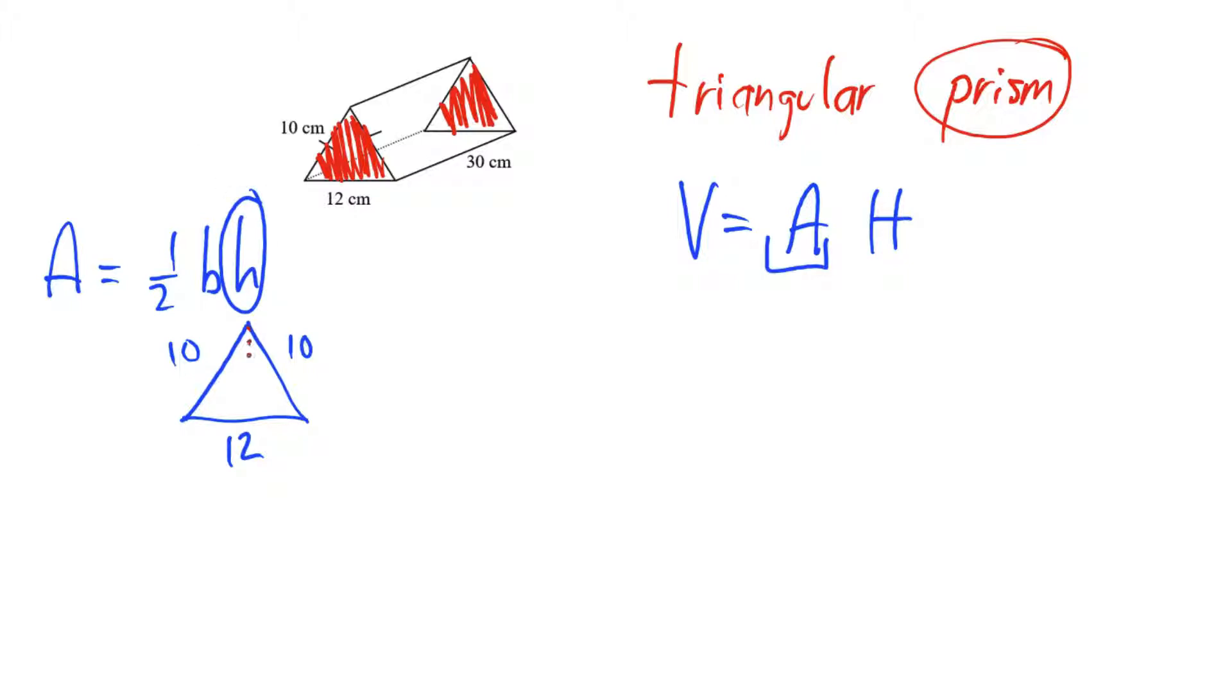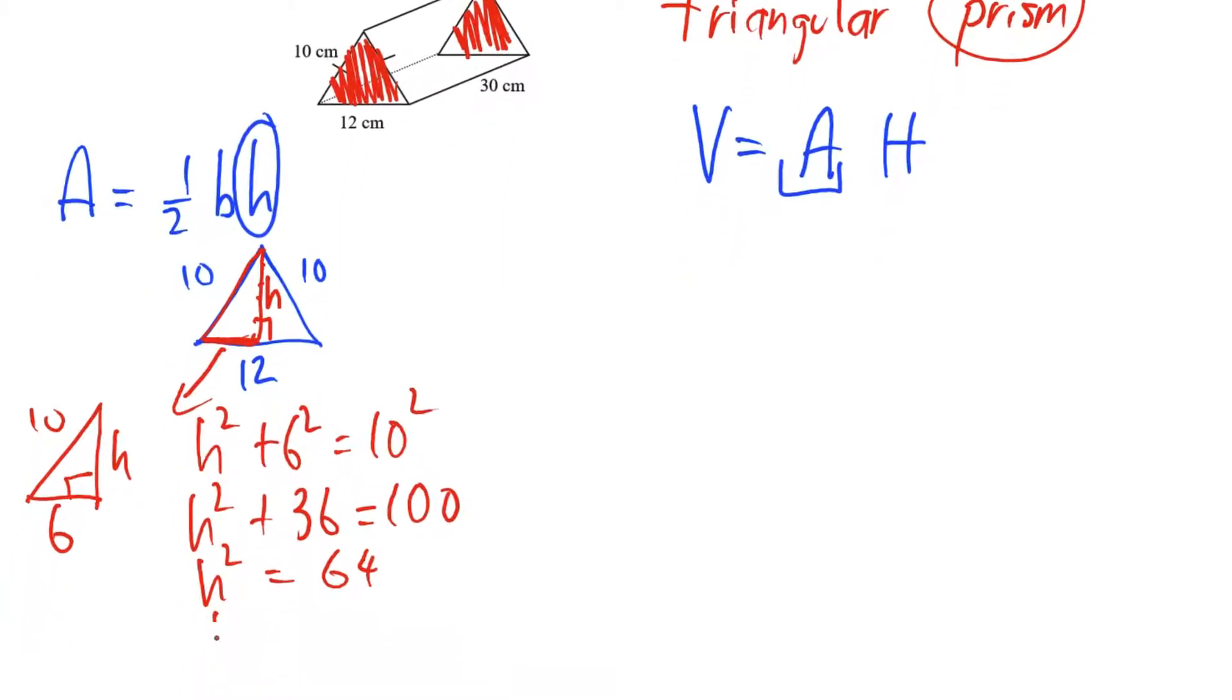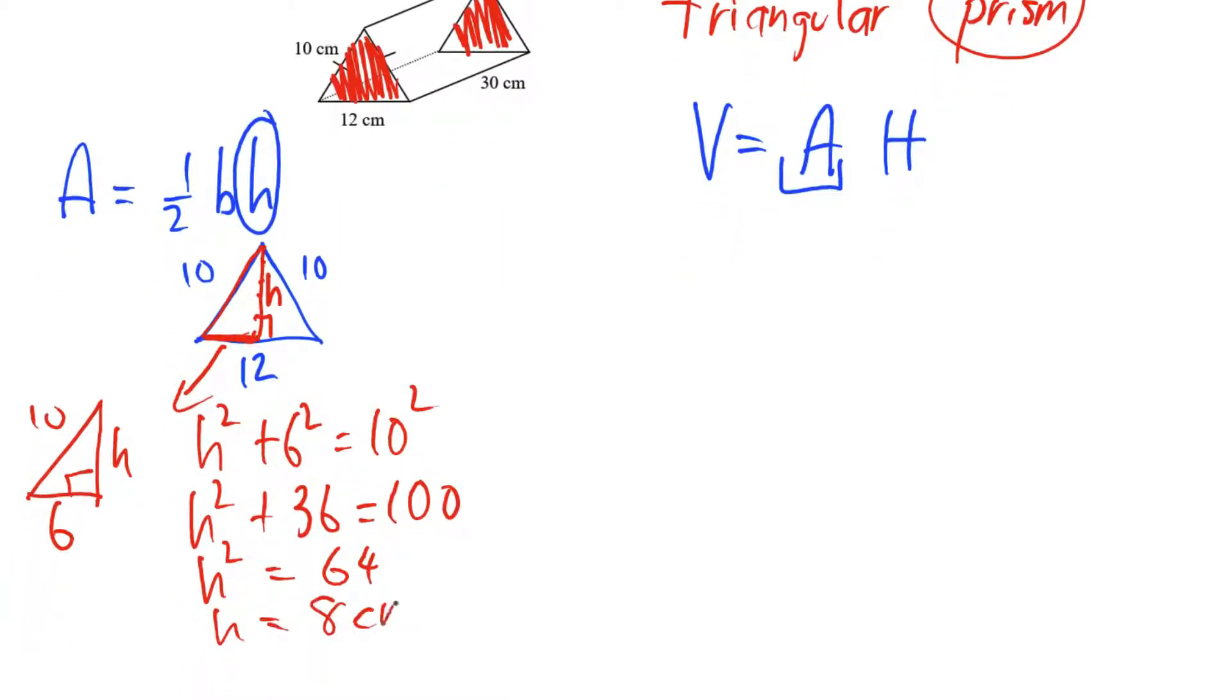So we're going to have to figure this distance out, h, using Pythagoras. And because it's an isosceles triangle, we can use this section, 10, h, and 6, to calculate the height. The height squared plus 6 squared will be 10 squared. The height squared plus 36 is 100. Subtract 36 is 64. So my height is 8 centimeters.